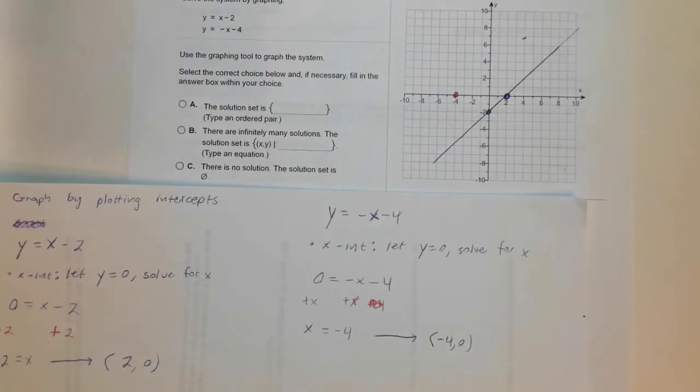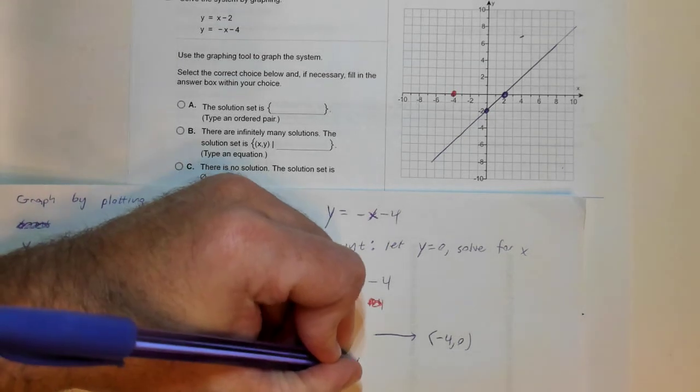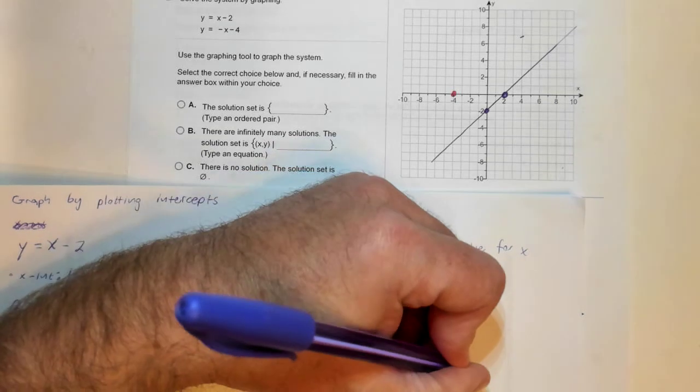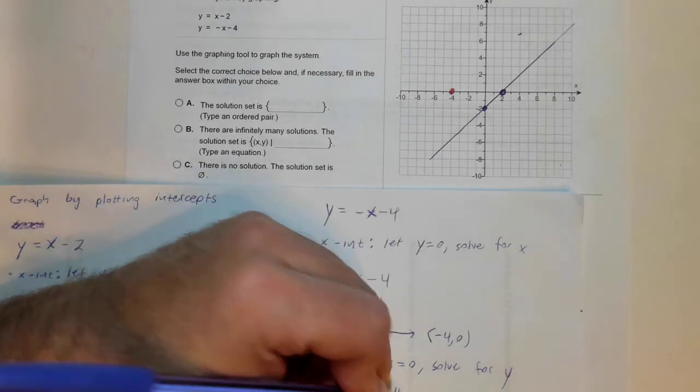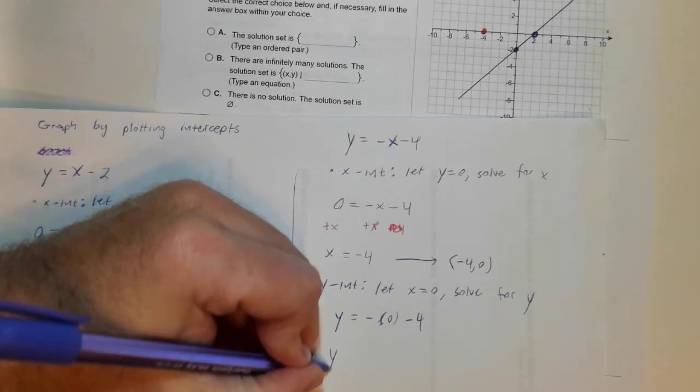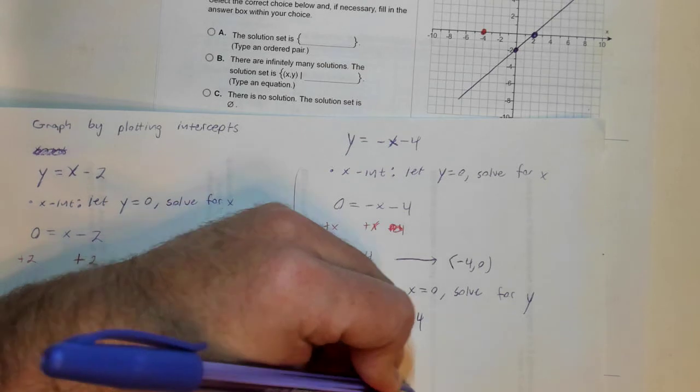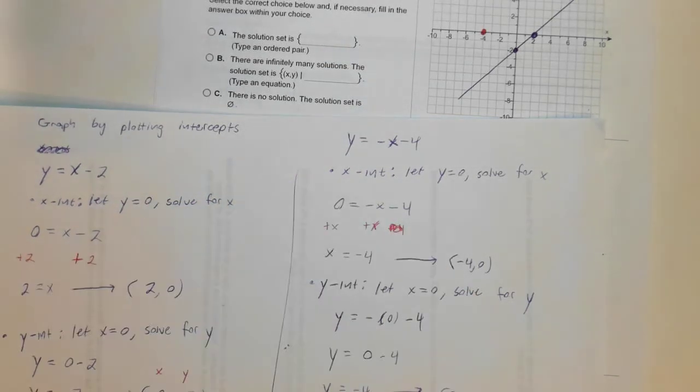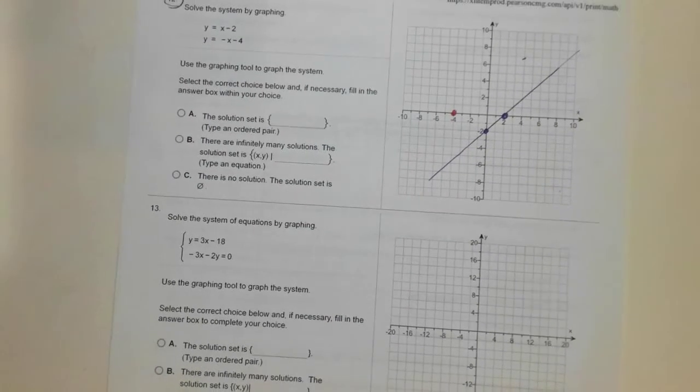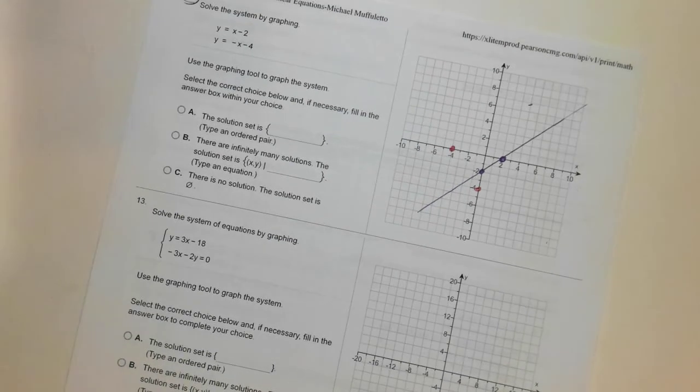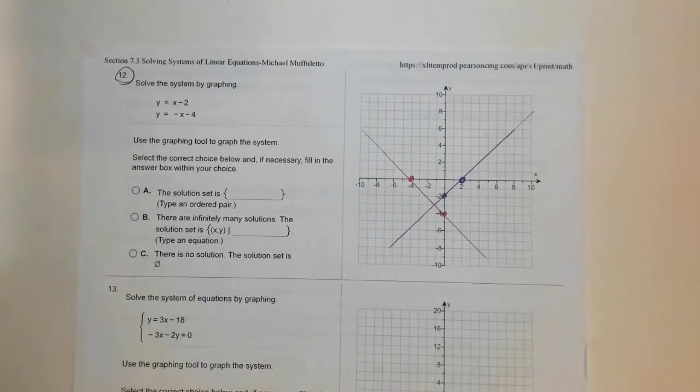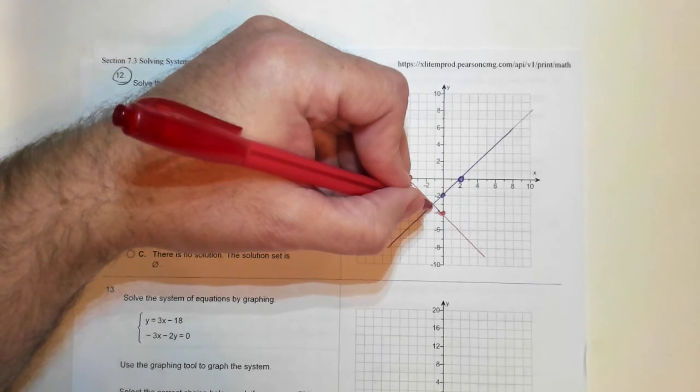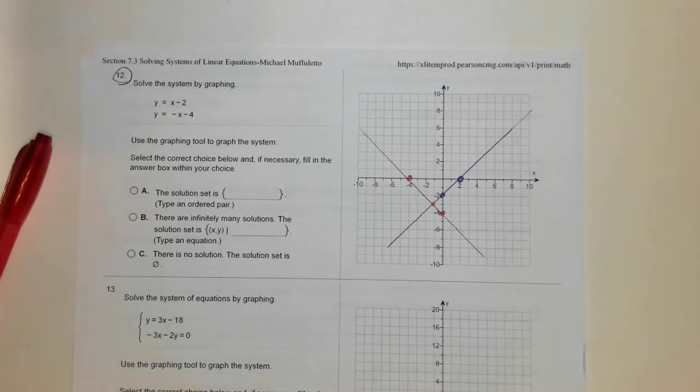Let's do our y-intercept for this line. The y-intercept: let X equals zero, solve for Y. Y equals minus zero minus 4. That's kind of weird. Minus zero is just zero, and then zero minus 4 is just minus 4. So that's the point zero minus 4. Let's plot that. Zero minus 4 is right here. Let's graph this line. It looks like these are intersecting. Now we've got to be, it's going to be on a whole number for us. It's looking like it's probably right there.